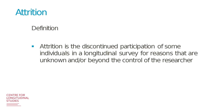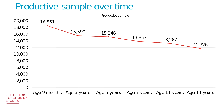The definition of attrition is the discontinued participation of some individuals in a longitudinal survey for reasons that are unknown or beyond the control of the researcher. For MCS, you can see what happens to the sample over time: at age nine months in wave one, we had 18,551 families, and the number of families started to progressively decline until reaching 11,726 by age 14.